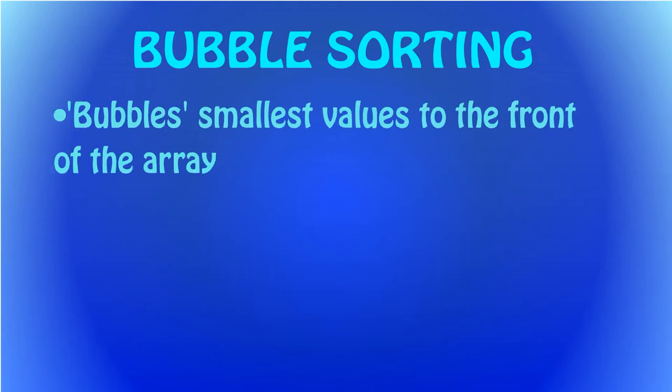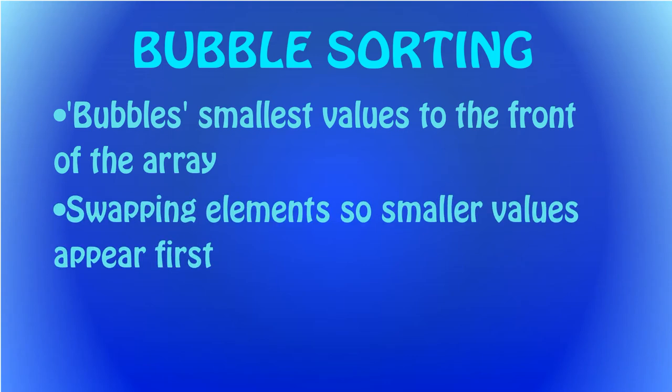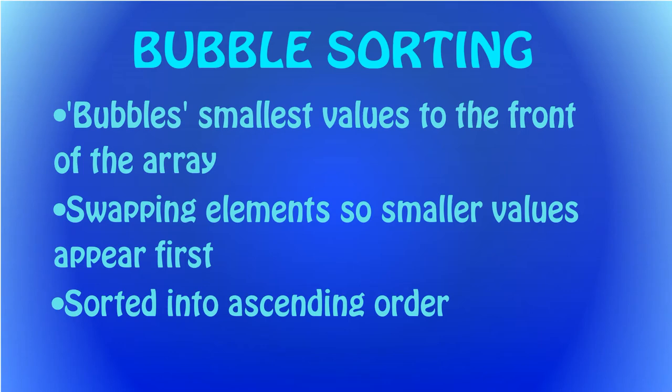During a bubble sort, the CPU bubbles the smallest values to the beginning of the array through swapping. For each pass made by the CPU, elements are swapped so that the smaller value appears first. By the end of the sort, the elements in the array are sorted into ascending order. Here are the numbers unsorted in the array.